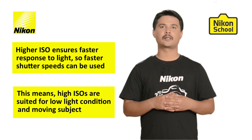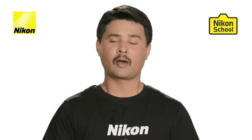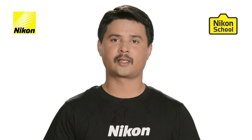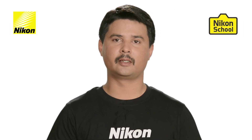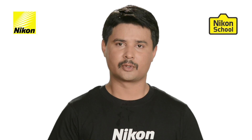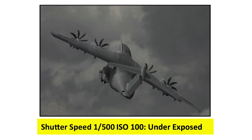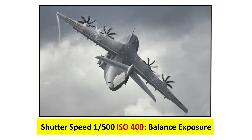Why would you want to use a faster shutter speed? In order to freeze the subject. Once you increase the shutter speed, you will notice the image tends to appear underexposed. In order to compensate for that underexposure, you need to increase the ISO to correct the exposure. So you boost the ISO number to get a properly exposed image.